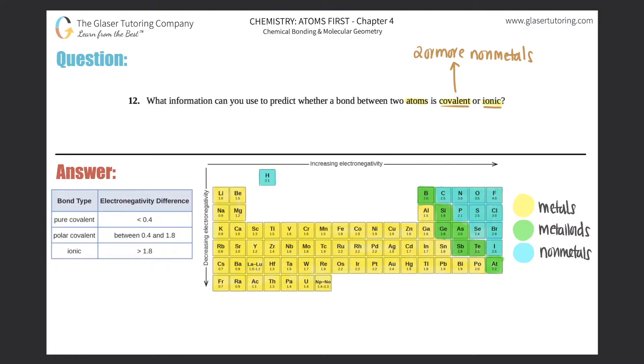So for example, I can have water. Water would be a covalent compound or a covalent molecule. Remember, molecules can only be covalent, not ionic. We have sugar, right? C6H12O6. That consists of carbon, hydrogen, and oxygen, and they're all non-metals.